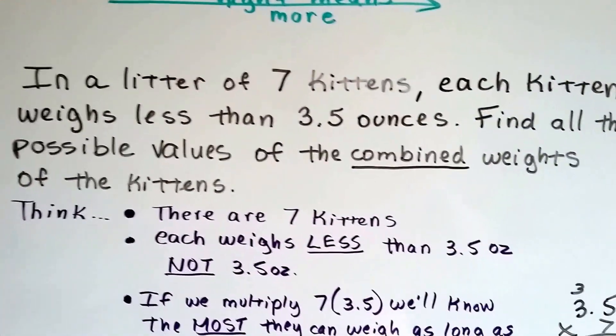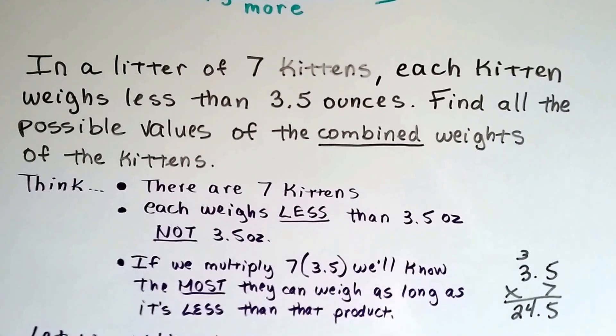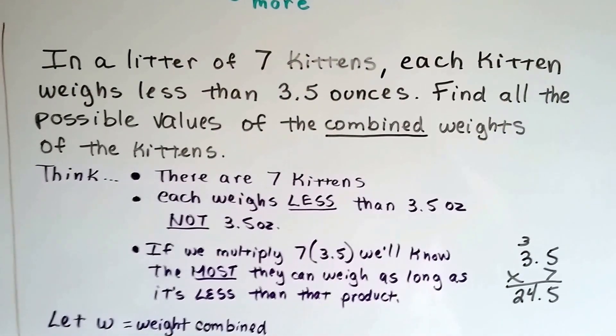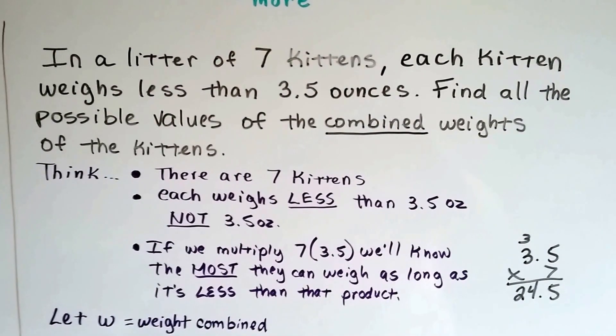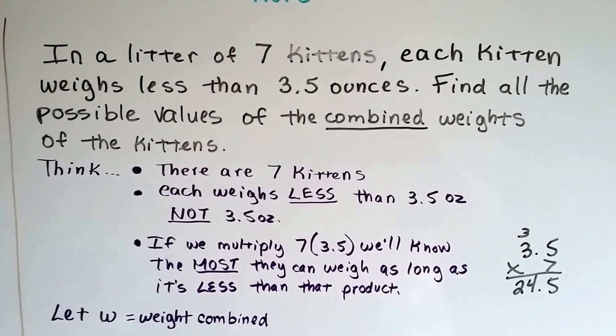All right, here's our next one. In a litter of seven kittens, each kitten weighs less than 3.5 ounces. Find all the possible values of the combined weights of the kittens.